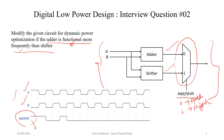Looking at the waveform, the add/shift selection line starts high, meaning the shifter output is selected. After one clock cycle the selection line goes to 0, selecting the adder output. It then briefly selects the shifter output again, and after that it always selects the adder output.